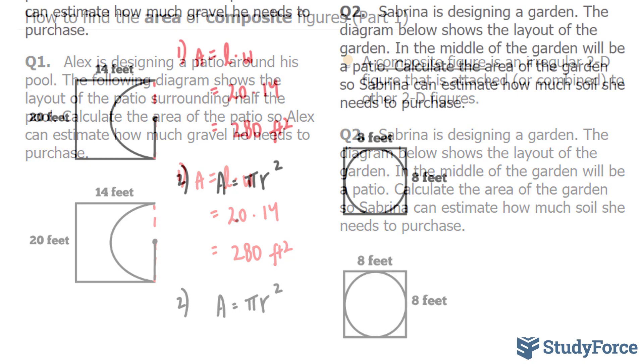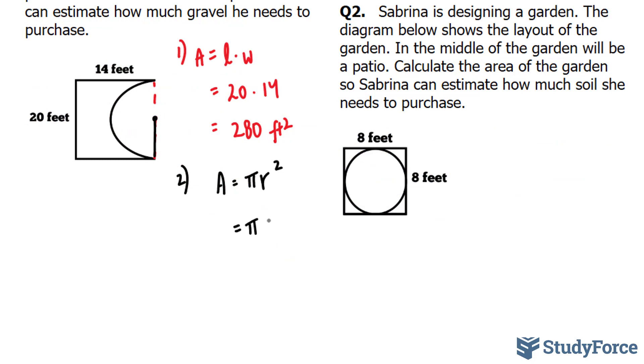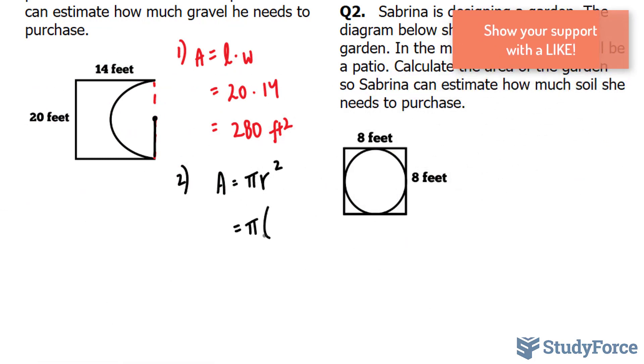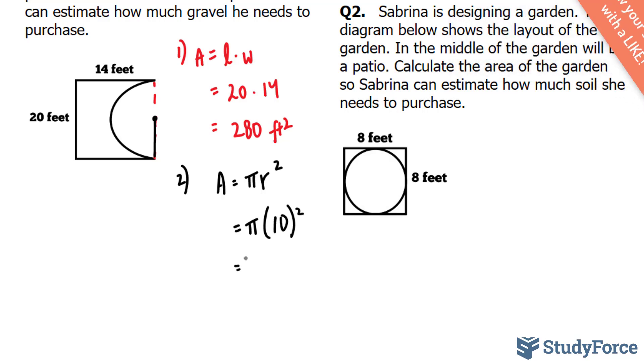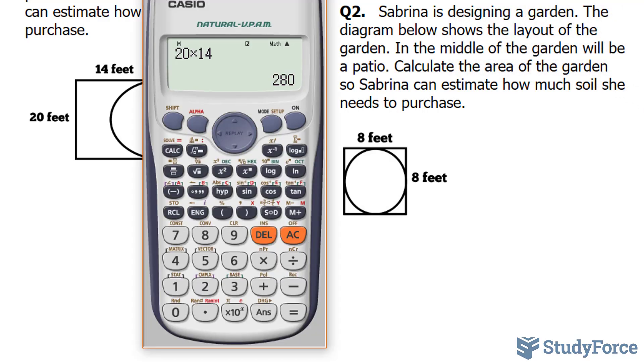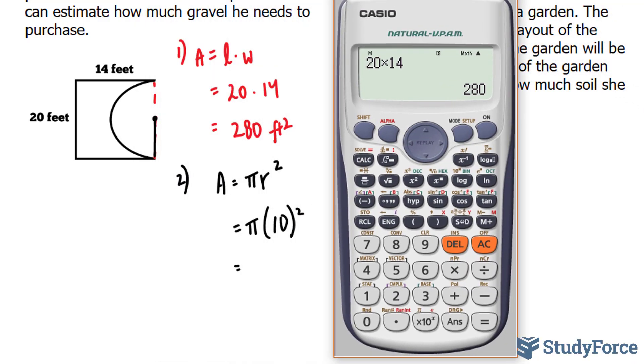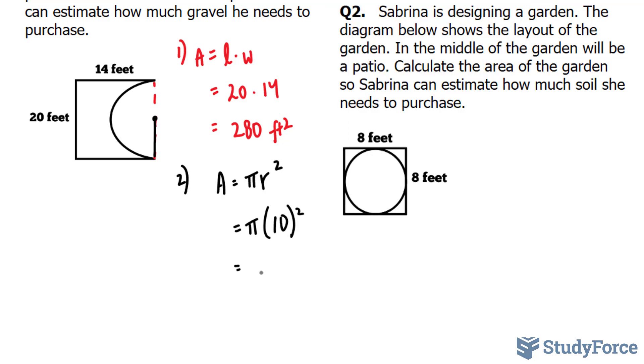Let's plug in what we know. Area is equal to pi, and we said 20 divided by 2 is 10. Using our calculator now, and luckily for us, we do have a pi button on our calculator. It's accessed by clicking Shift, this button, 10 to the power of 2. And that gives us 100 pi.